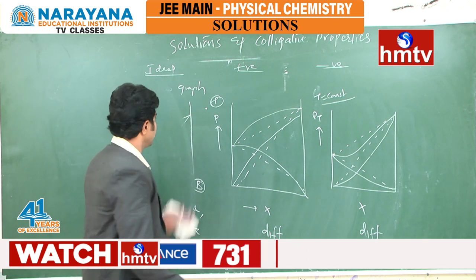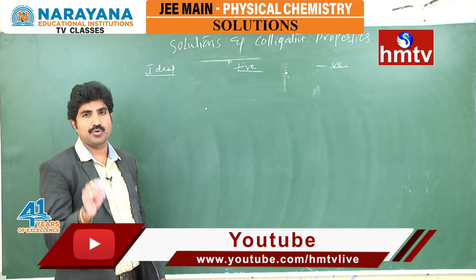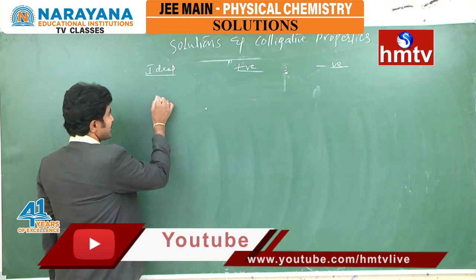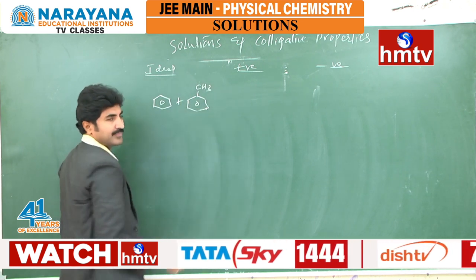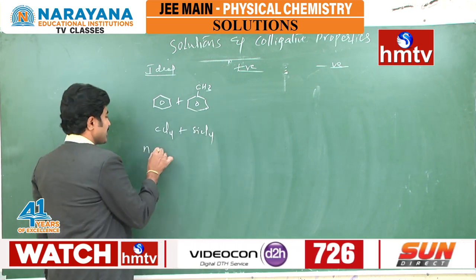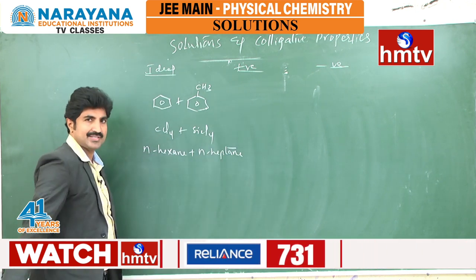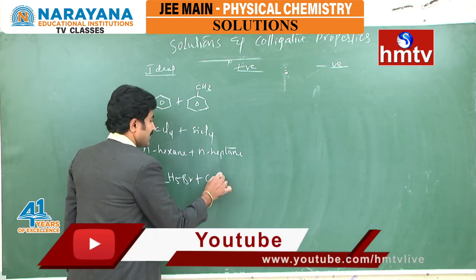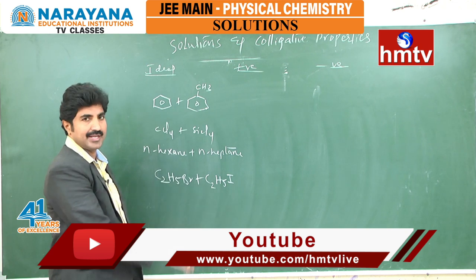For ideal solutions, actually there are no perfectly ideal solutions, but some combinations nearly behave as ideal solutions. The best examples are benzene and toluene, carbon tetrachloride and silicon tetrachloride, N-hexane and N-heptane mixture, and ethyl bromide and ethyl iodide. These are the best examples for ideal solutions — they nearly behave as ideal solutions.